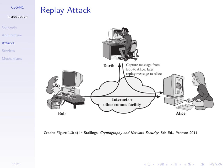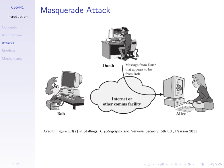Why is the masquerade attack an active attack? In the normal situation — no attacker — Bob doesn't send anything and Alice receives nothing. But when Darth performs the attack, Alice receives a message she wouldn't have received otherwise. Something has changed from the normal users' perspective, so we say that's an active attack.